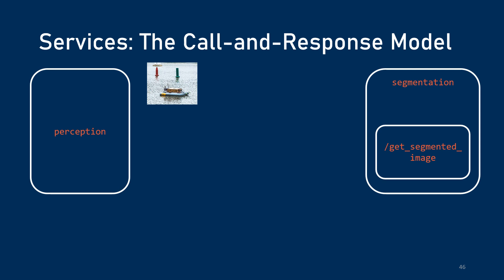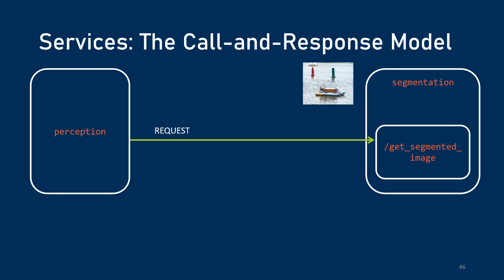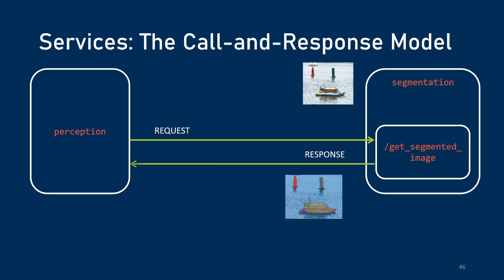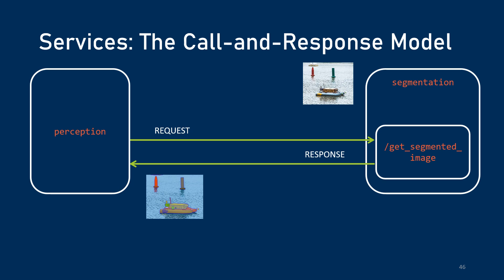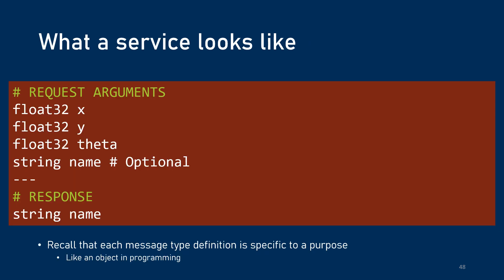Let's say you have a perception node and it's gotten new camera data and wants it segmented. You've got a dedicated program that does segmentation of images. The perception node is the client and it can make a request to the segmentation's Get Segmented Image service. The service gets the request and sends back a response with the segmented image. Like a standard ROS topic it's not one-to-one, but there is only one service server — you can have multiple clients, but only one server for each ROS service. This is what a service definition looks like: there is a definition for what data goes into the request and a definition for what data goes into the response.